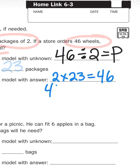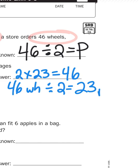So 46 wheels divided into packages of 2 would give you 23 packages.